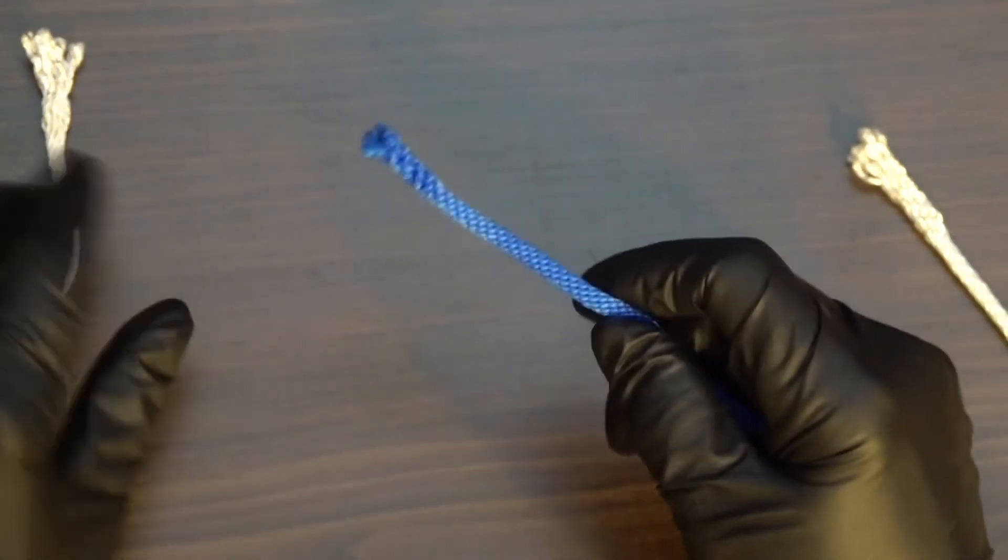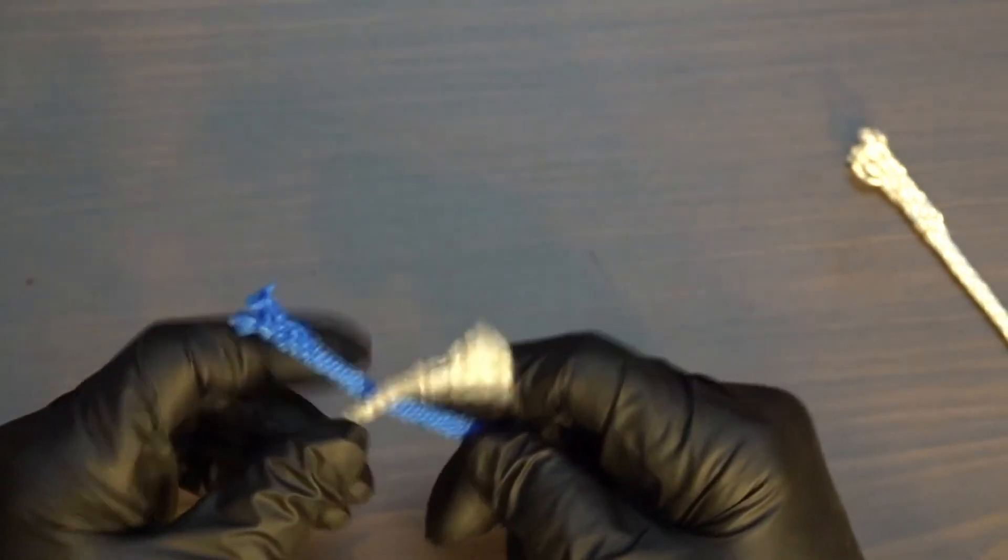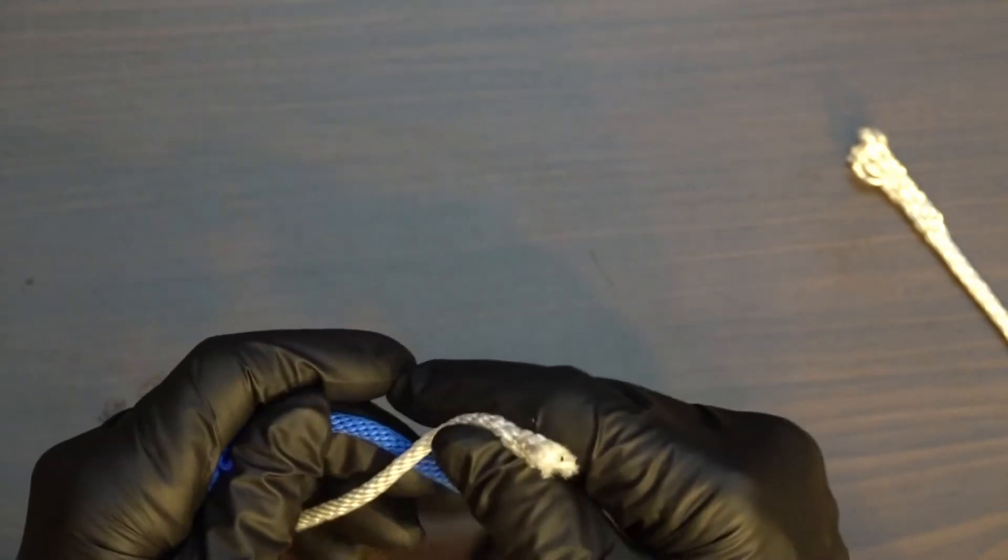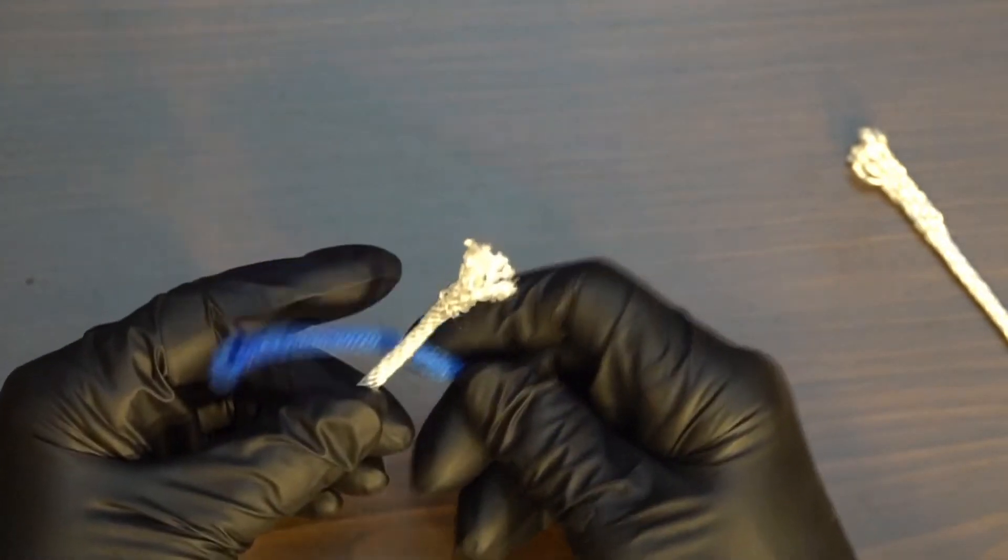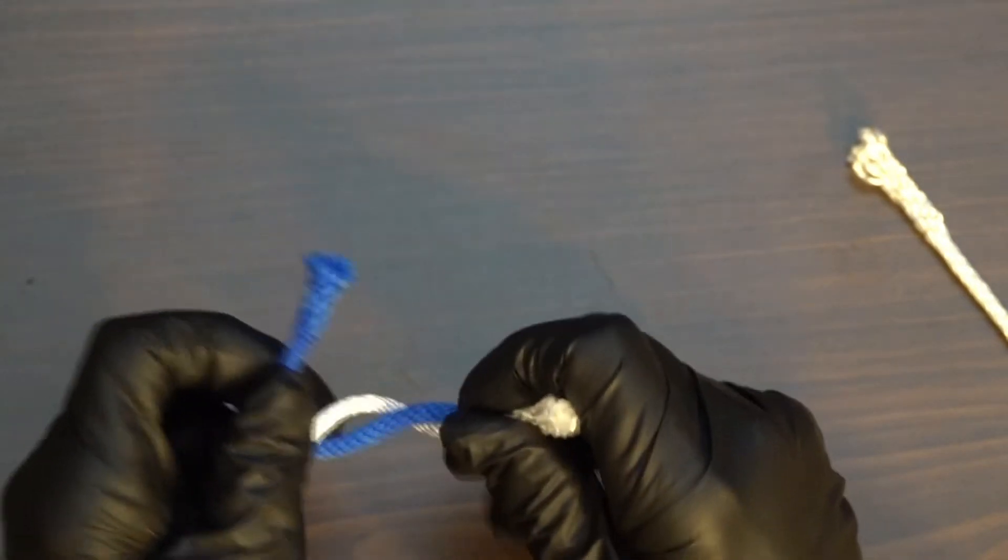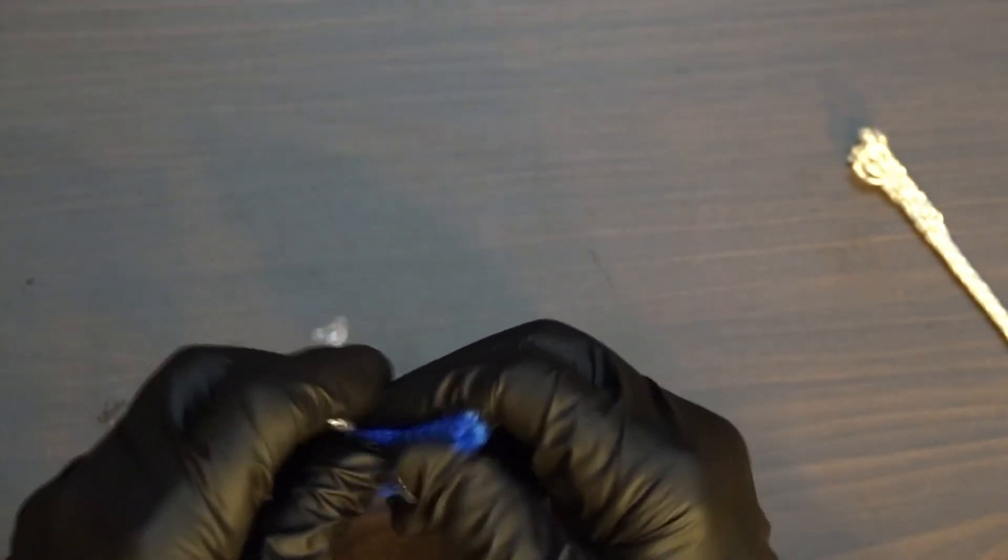What we're going to do is tie one of these in a granny knot and the other in a square knot then we'll test them. Let's do granny knot first, so what we're going to do is left over right and then left over right again.